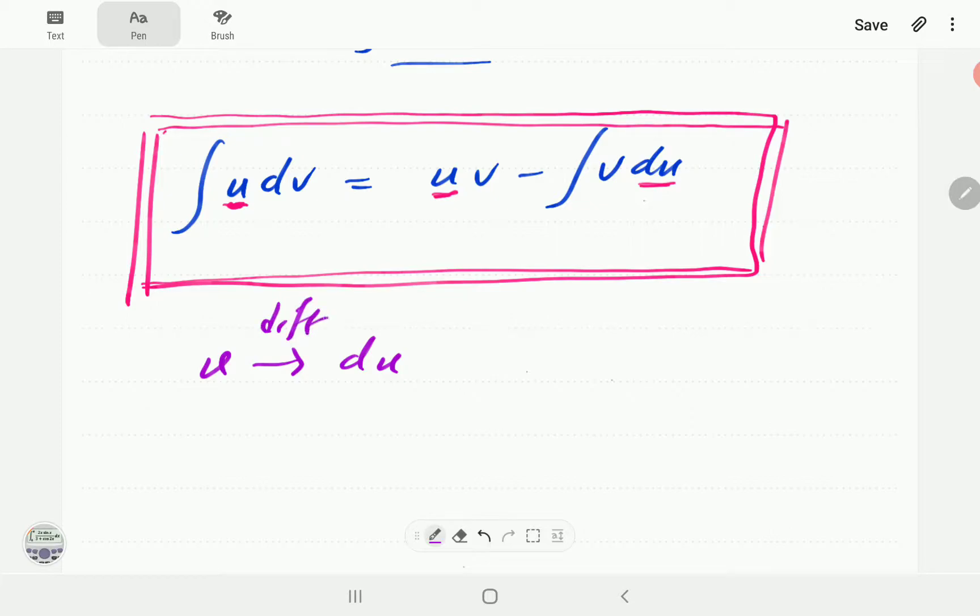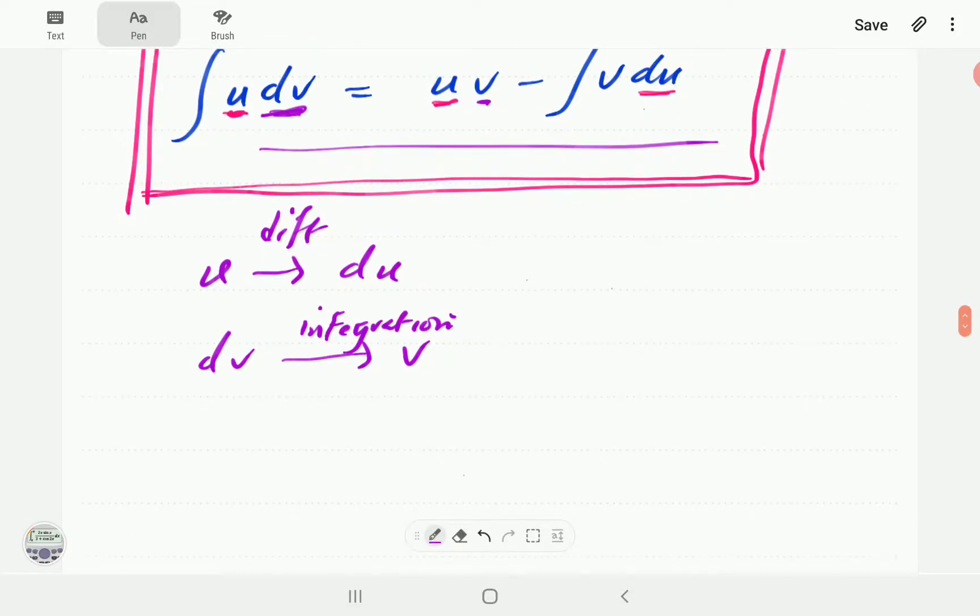And then we have got dv, and then on the right hand side we've got v. Going from dv to v is the process of integration. So what is happening in this setup is we're only integrating part of the setup. We're only integrating dv, then u we are differentiating. That's why it's called integration by parts.